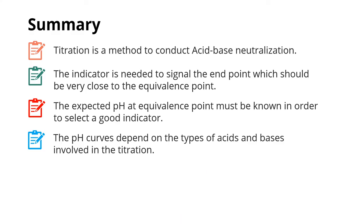In summary, we learned about titration, the method to conduct acid-base neutralization. We need to select an indicator: a good indicator will signal the endpoint which should be very close to the equivalence point, so the expected pH at equivalence point must be known in order to select the correct indicator. We saw different pH curves that depend on the types of acid and base involved in the titration. I'll see you in the next lesson. Sawat-dee kha.